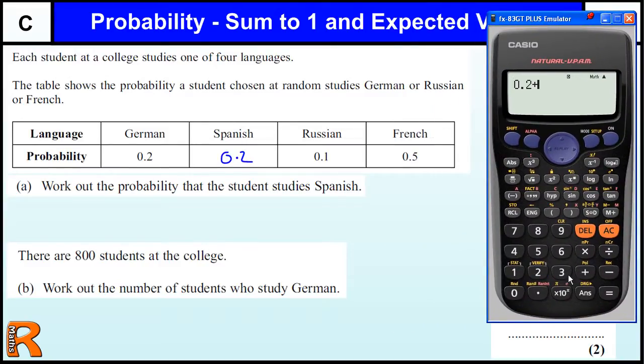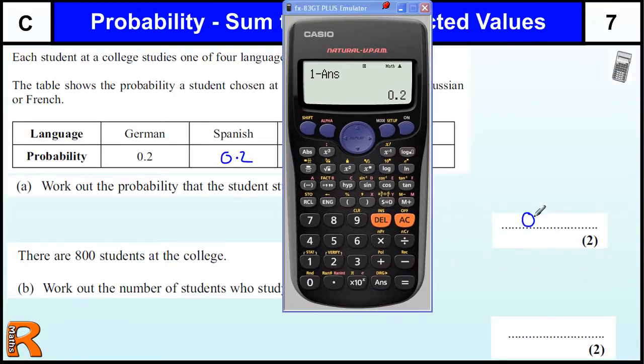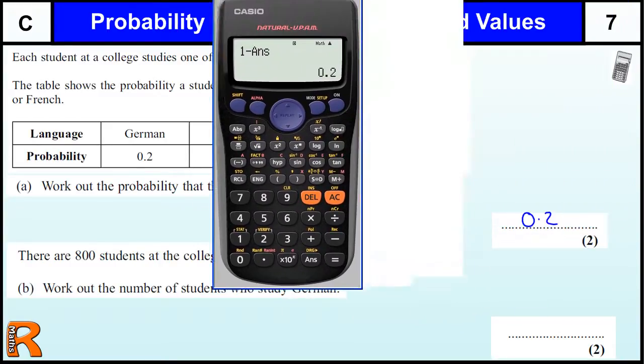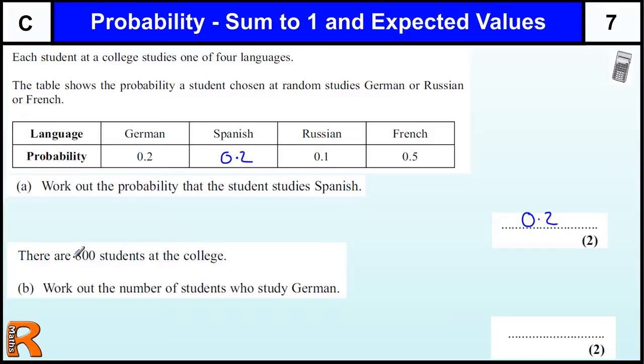0.2 plus 0.1 plus 0.5 is 0.8, and one take away 0.8 gives us 1/5th or 0.2. If your question's in decimals, leave your answers in decimals. If your question's to do with something out of something, write it in fractions. So the answer is 0.2.